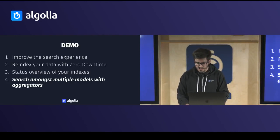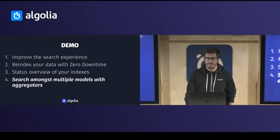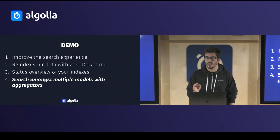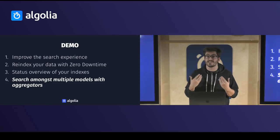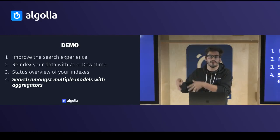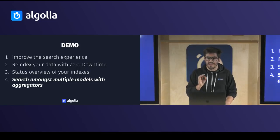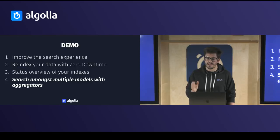Let's move on to my favorite feature: aggregators. With Scout, a model is always related to an index, which means you cannot have multiple types of models in the same index. Every time you want to provide a search experience, you have to search for articles, threads, or whatever. With aggregators we have solved this — now you can search using a single search input across different types of models.